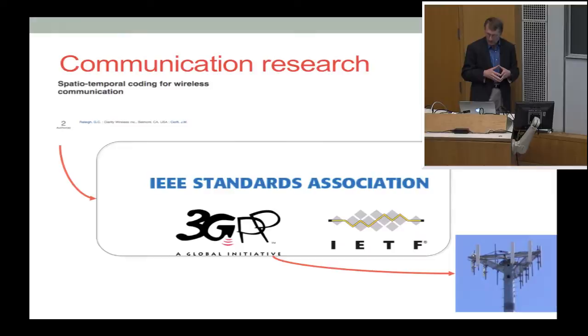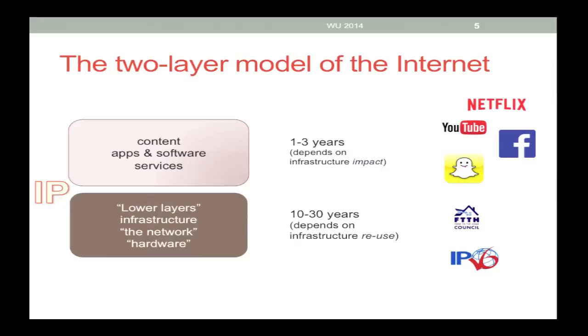Thus, in terms of understanding internet evolution, it is useful to think very distinctly about two layers. All of you who've taken a networking course think of the internet as either seven layers or five layers. But in terms of fundamental industry structure and timescales, we should really think of the internet as a two-layer model. On top we have content, applications, and software services — with innovation cycles of one to three years. You can develop a new application and get significant scale and deployment within even a year, simply because users don't require anybody else to do anything. You just download the application as long as the network bandwidth supports it.